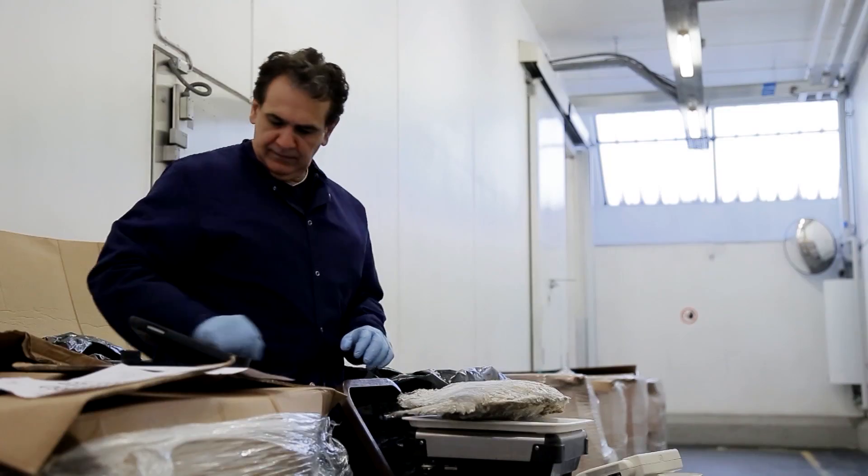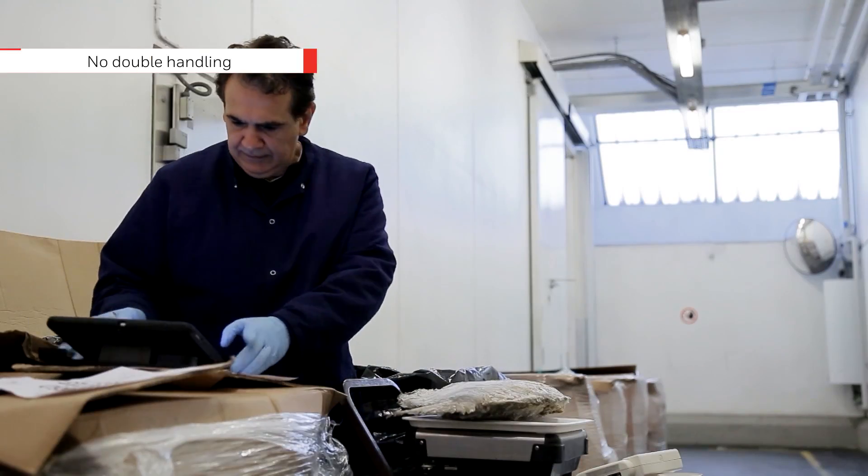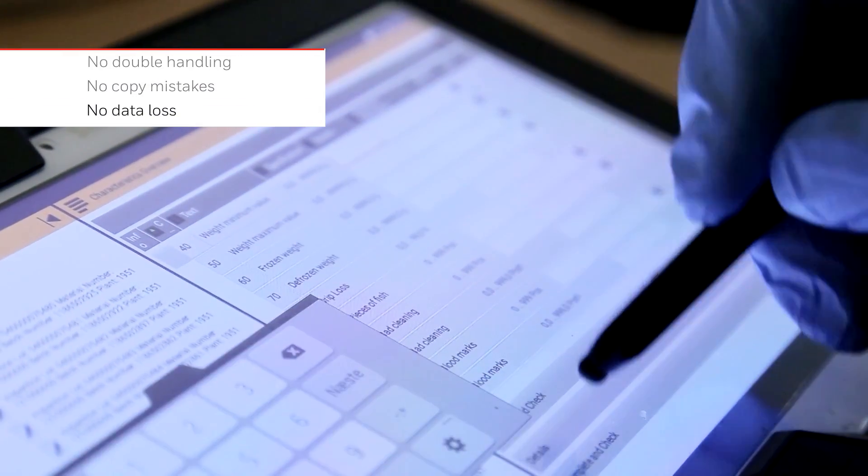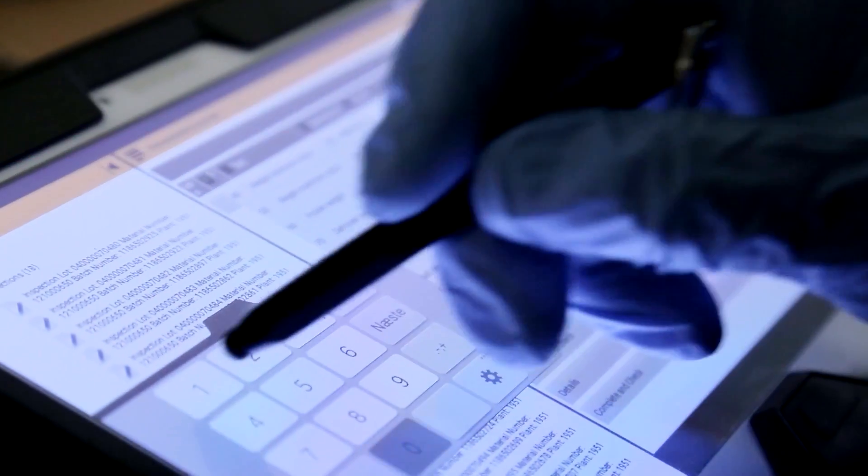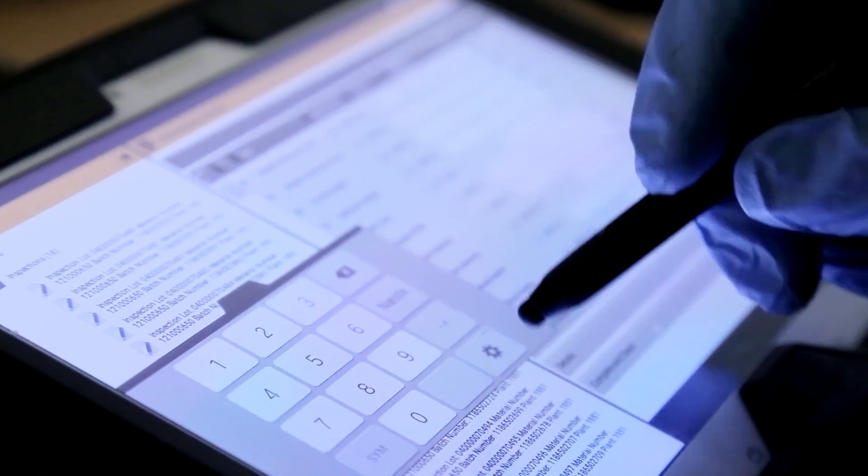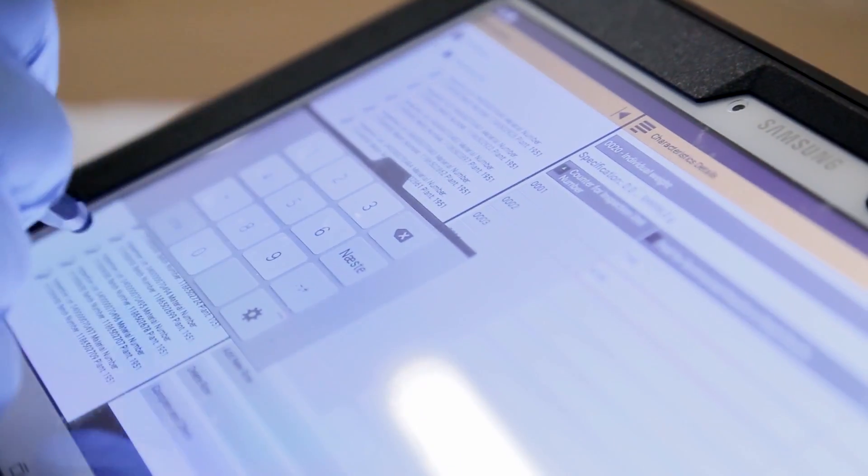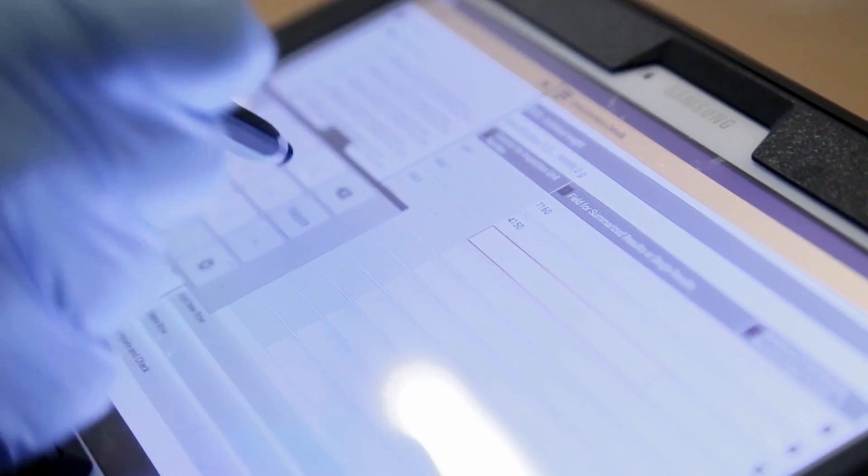Things like material numbers and batch numbers are coming from the system and displayed in the application, so it reduces the amount of things that our employees have to physically write on a piece of paper. Then the SAP system pulls data out of the cloud and makes it available for our quality manager.